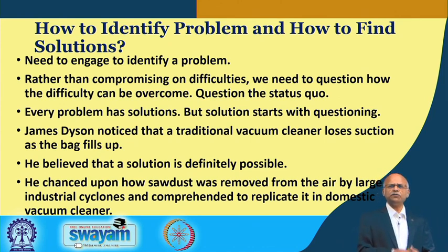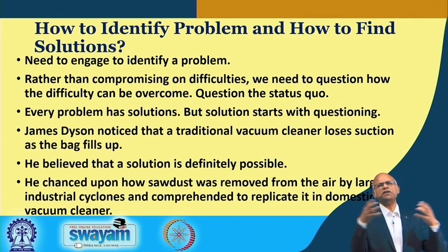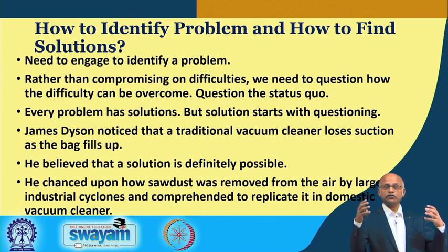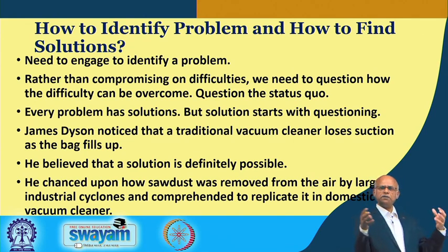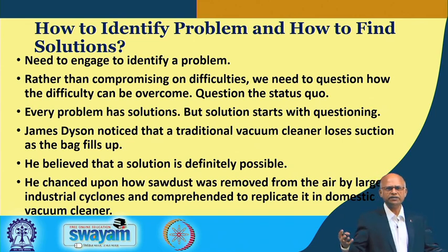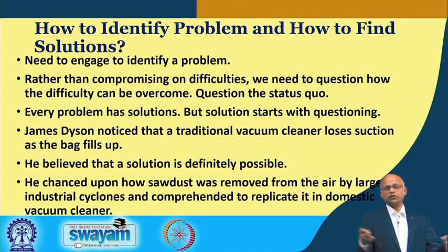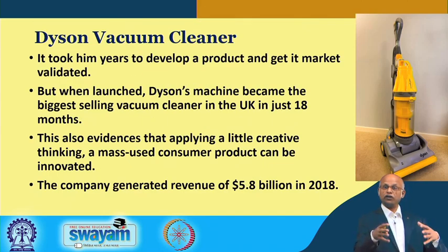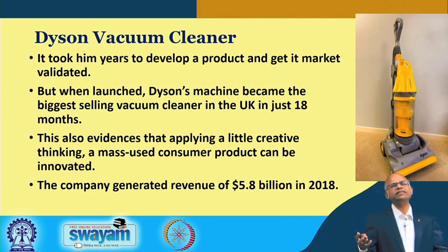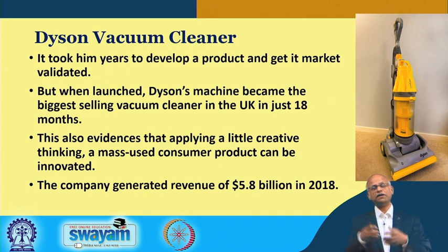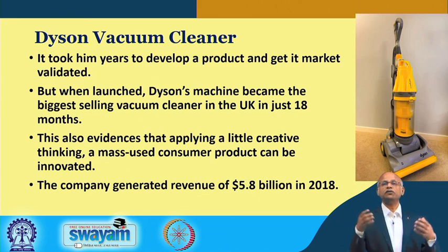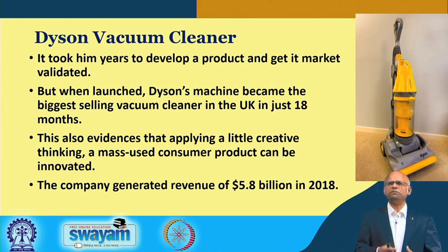He questioned why it had to be like this and had the leap of faith that there definitely was a solution. He was looking around — not necessarily searching for a solution — when he chanced upon a sawdust-removal cyclone separator where he found a bag that cleans on the go; you do not have to open the cleaner, remove dust from the bag, and refit it. He realized this technology could be replicated in a vacuum cleaner. It was a eureka moment, and eventually he came up with a vacuum cleaner using the same technology. He filed several patents, obtained them, and by 2018 it had become a 5.8 billion dollar company.